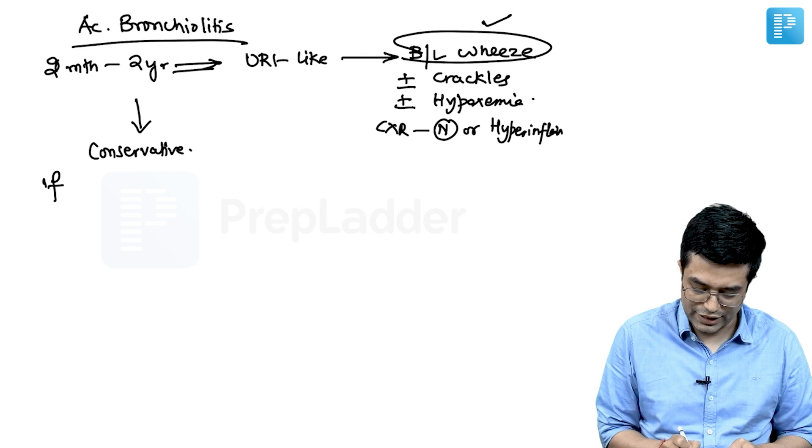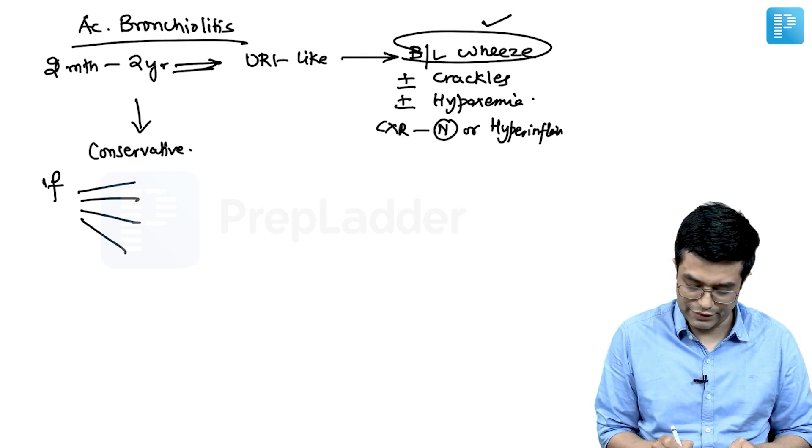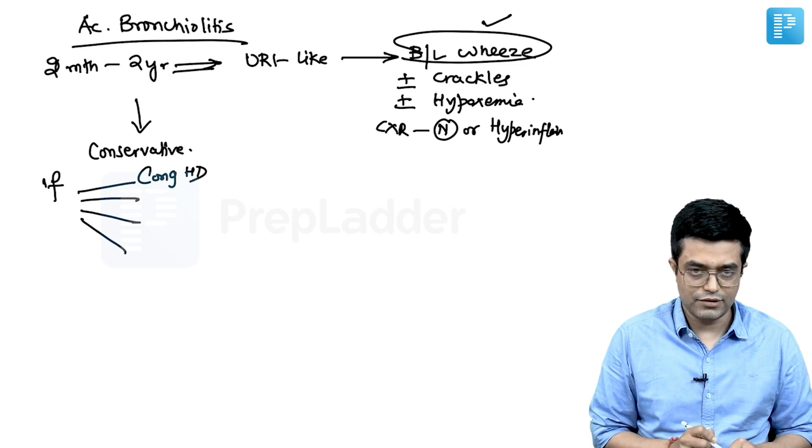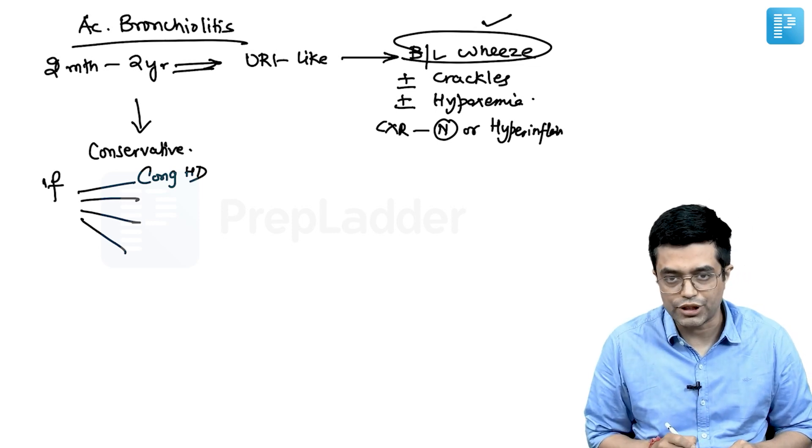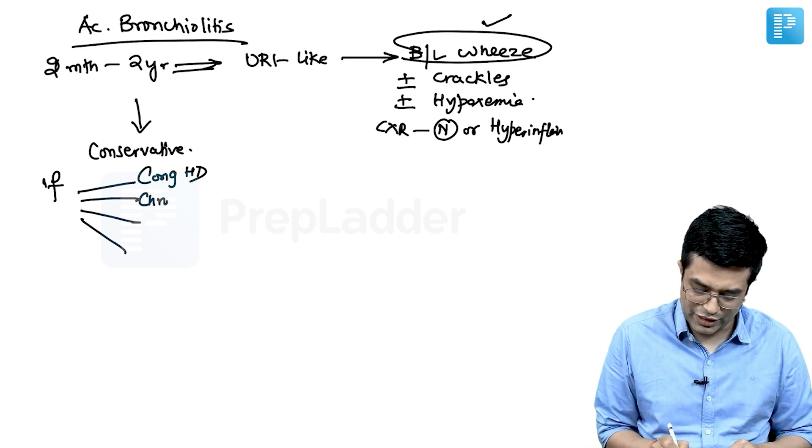However, if the child is having any of these problems: if the child is having a congenital heart disease, particularly significant left to right shunt; if the child is having a chronic pulmonary disease,